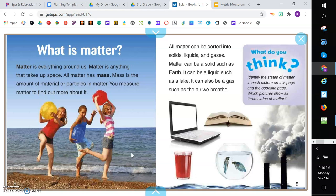All matter can be sorted into solids, liquids, and gases. Matter can be a solid, such as earth. It can be a liquid, such as a lake. It can also be a gas, such as the air we breathe. And what do you think? You can take a moment here and identify the states of matter in each picture on this page and the opposite page. Which picture shows all three states of matter? So if you want to pause the video here, you can. Totally your choice.